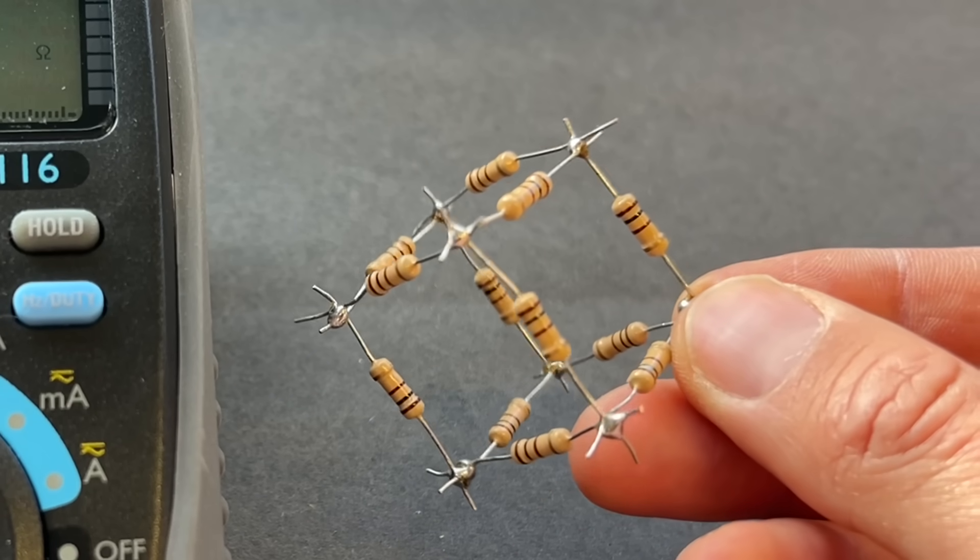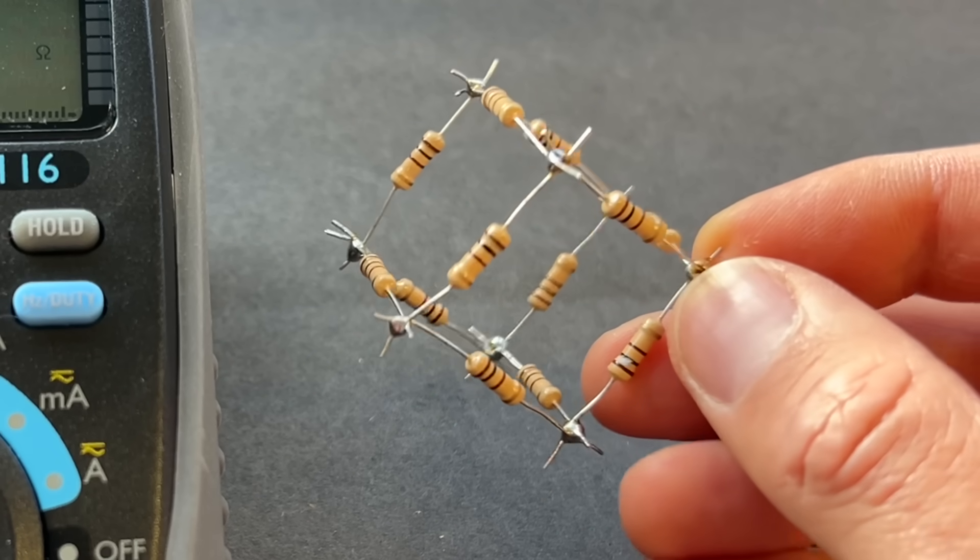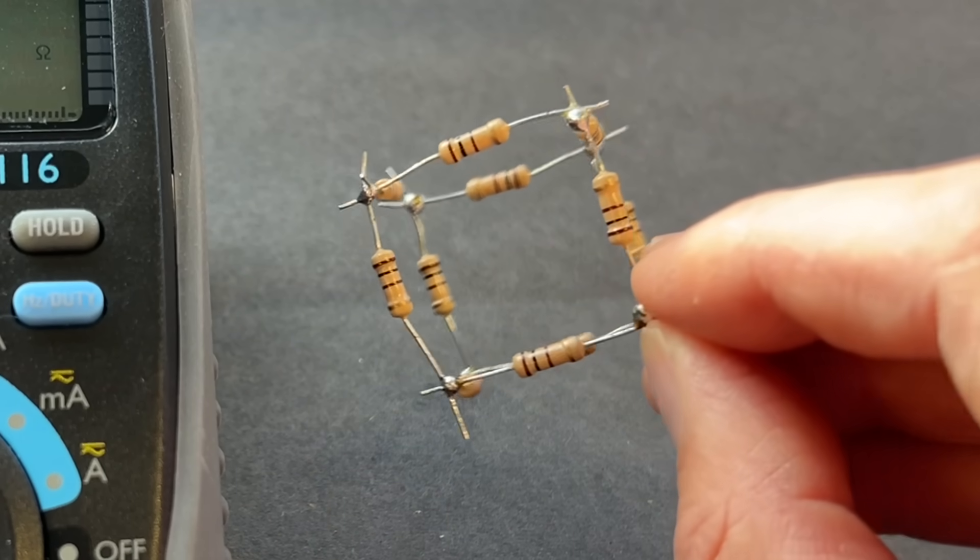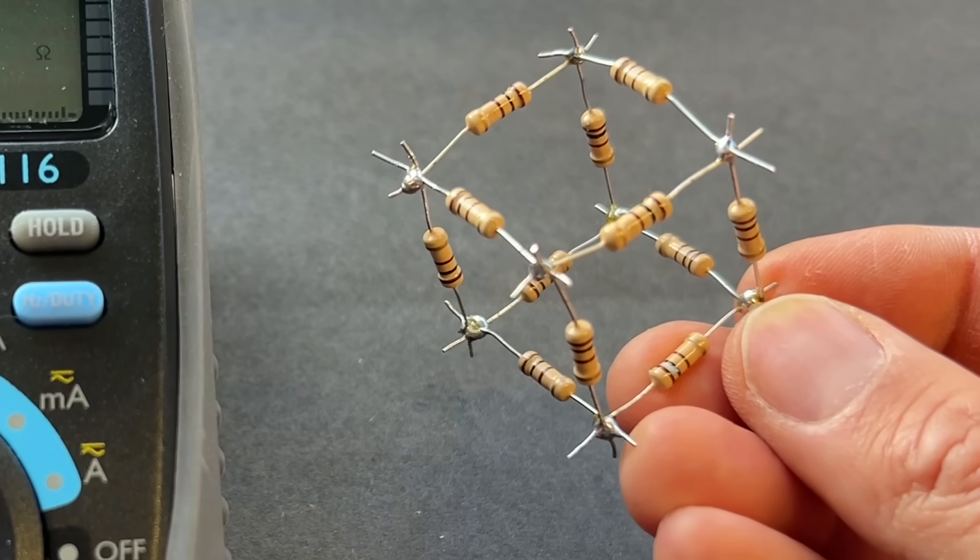I thought it'd be interesting to build a resistor cube and see if the theoretical resistance between the opposite corners matched with the practical measurements.